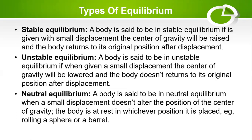Starting with stable equilibrium — a body is said to be in stable equilibrium if, when given a small displacement, the center of gravity is raised and the body returns to its original position after displacement. Stable equilibrium means the body is in a condition of stability: it may be moved a little but it returns to its original position after that displacement.